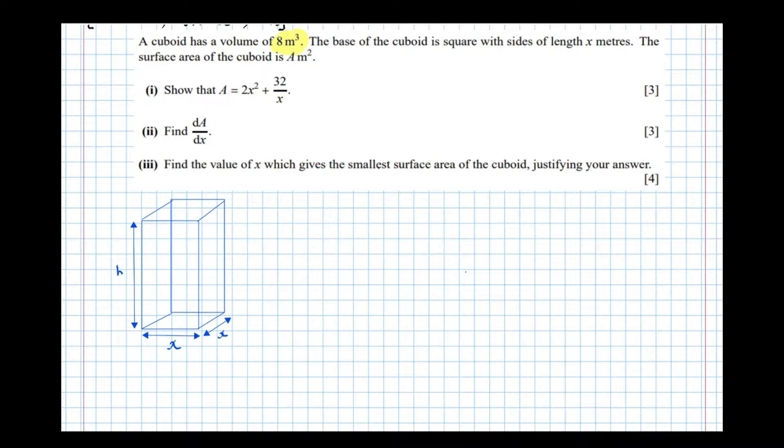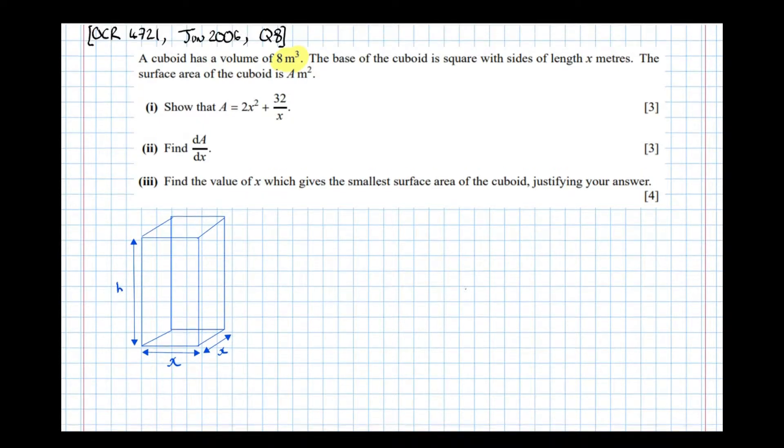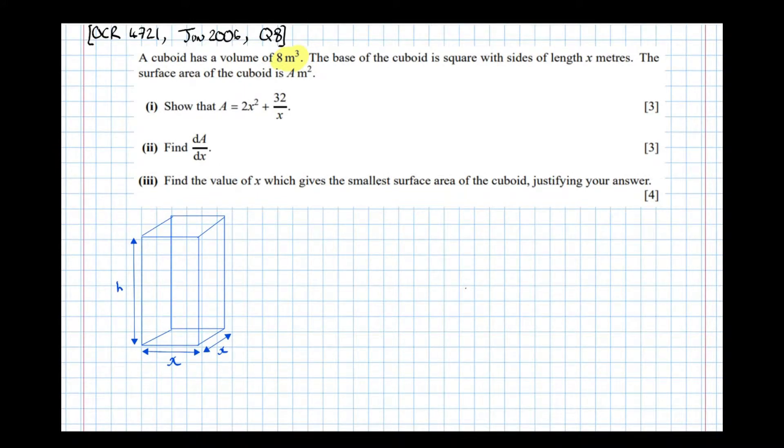So going back to the information in the question, it says a cuboid has a volume of 8 meters cubed. From the diagram, we see that the volume is the base area x squared times the height, which equals 8. Now we're going to use this formula later to eliminate a variable.